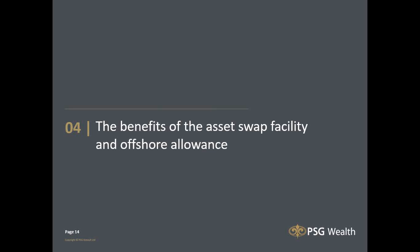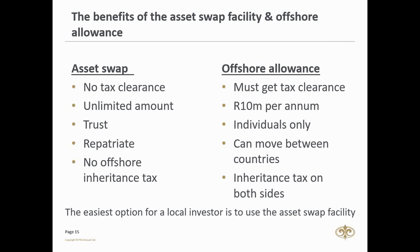The third point is the best way to take your money offshore, looking at the asset swap facility versus the offshore allowance. For the asset swap: you don't need any tax clearance, it's an unlimited amount, and you can invest via a trust, as an individual, or through a company. When you sell your investment, you must repatriate that money. In the event of death, there is no offshore inheritance tax for the individual, company, or trust — it will only be taxed in South Africa.